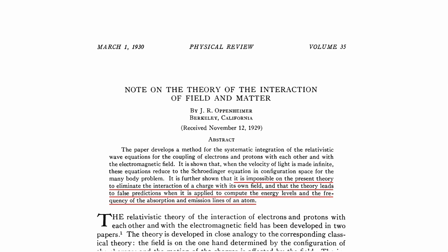Oppenheimer concluded that it is impossible on the present theory to eliminate the interaction of a charge with its own field, and the theory leads to false predictions when it is applied to compute the energy levels and the frequency of the absorption and emission lines of an atom.